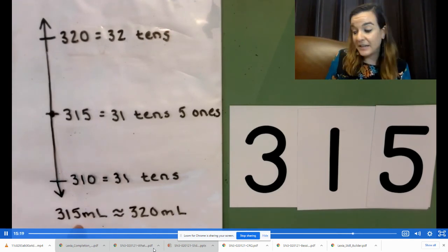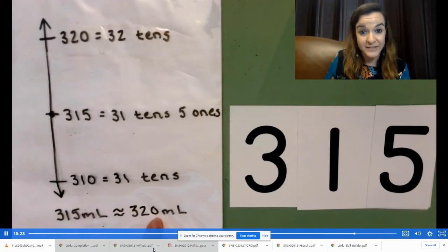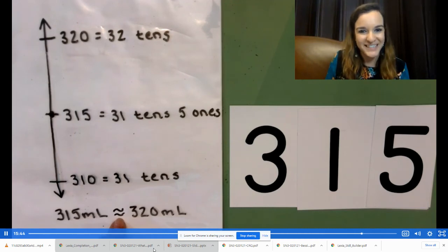I also want to draw your attention to the symbol I used to signify that it is about. This is an approximation symbol. Notice that the lines are not straight like they are in an equal sign. You will see this on your problem set today. Let's practice with this symbol and one more amount. Go ahead and erase your board.